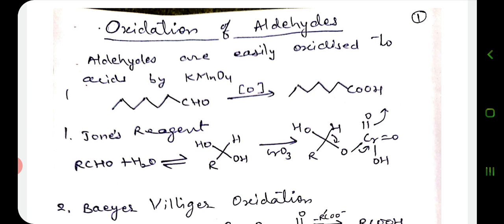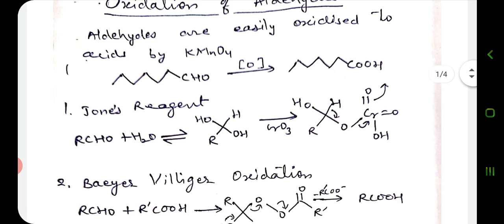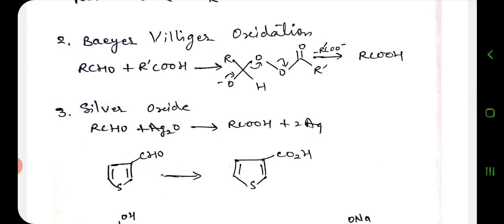N-heptanoic acid is oxidized by 78 percent. With the dihydroxylation, we get a 1,1-diol, and that diol is being oxidized and converted into carboxylic acid.